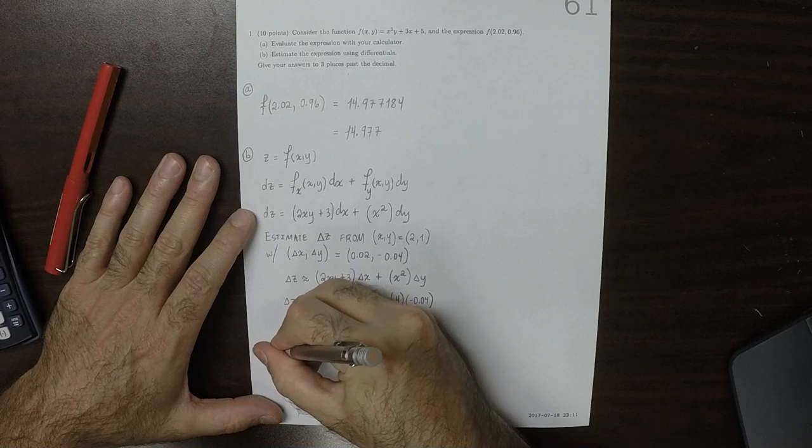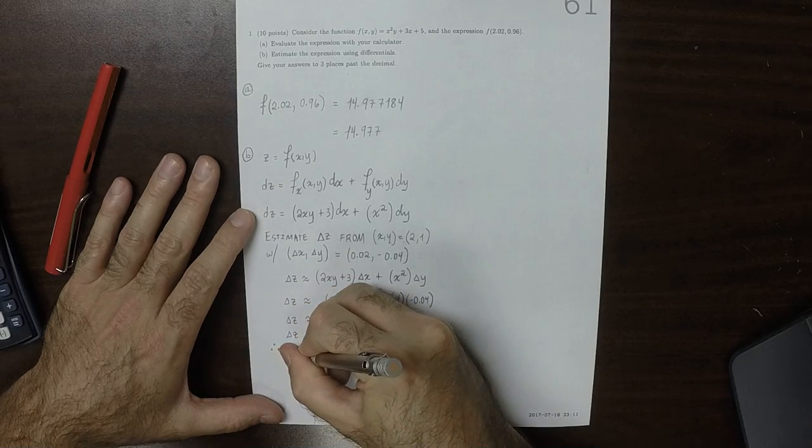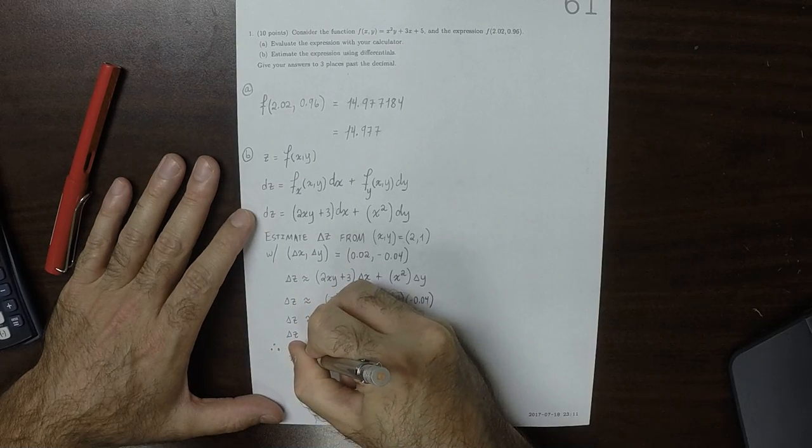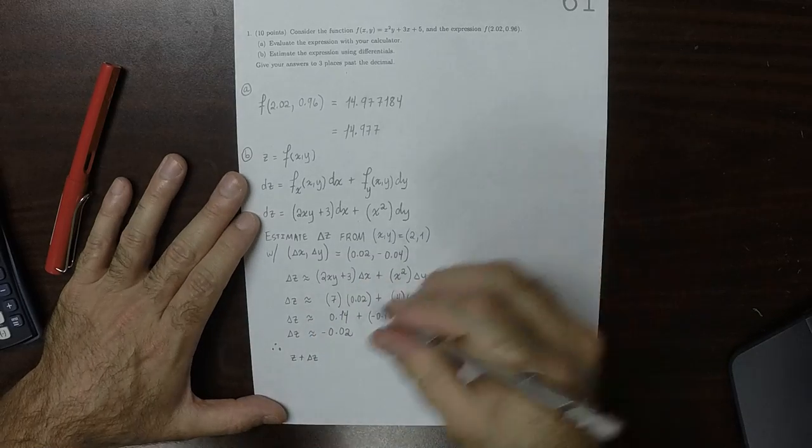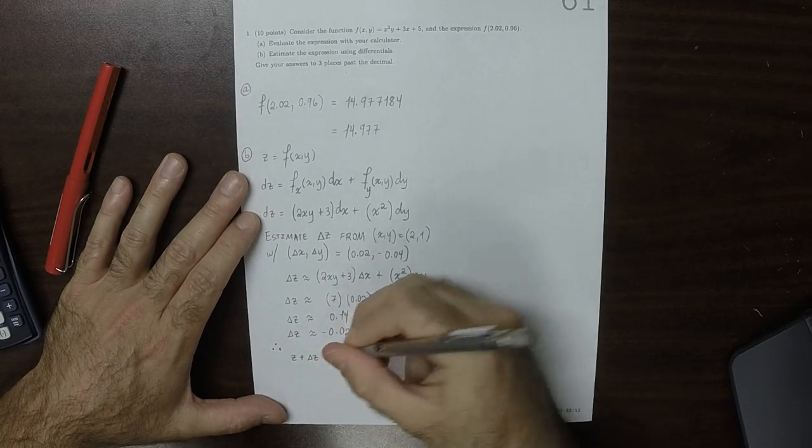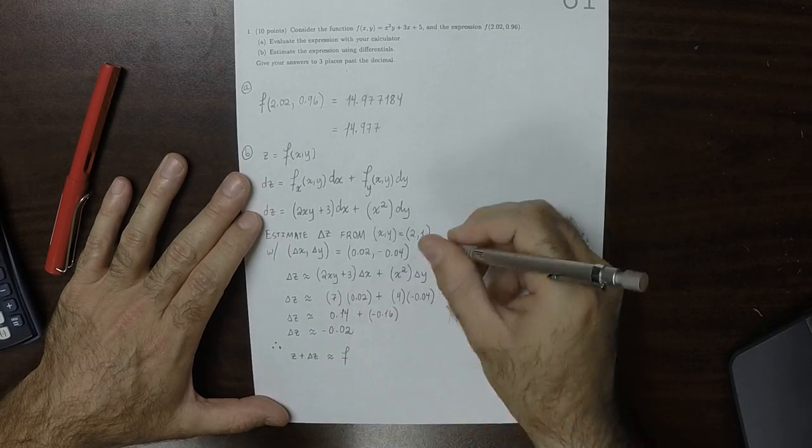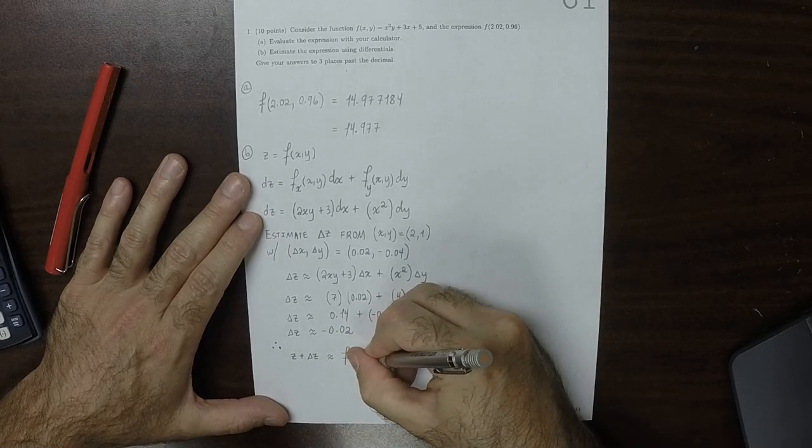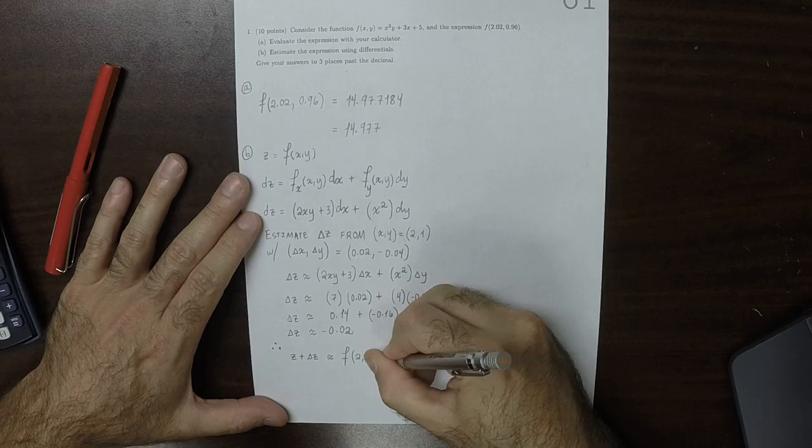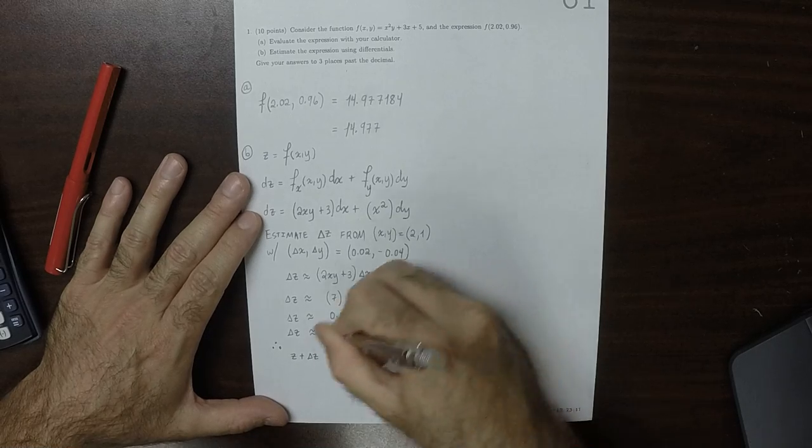So, therefore, z plus delta z, the new value that we're looking for, is approximately f evaluated at 2, 1, plus delta z, which is that value.